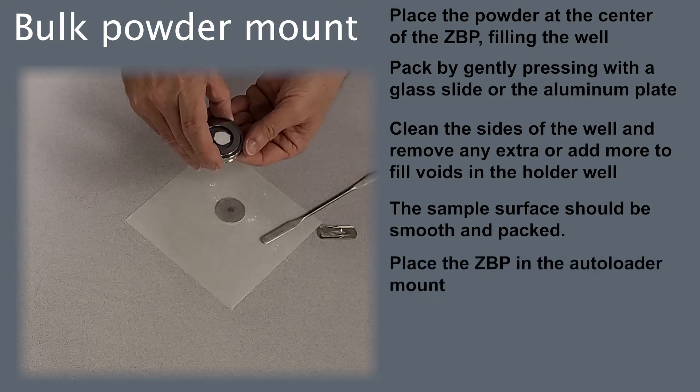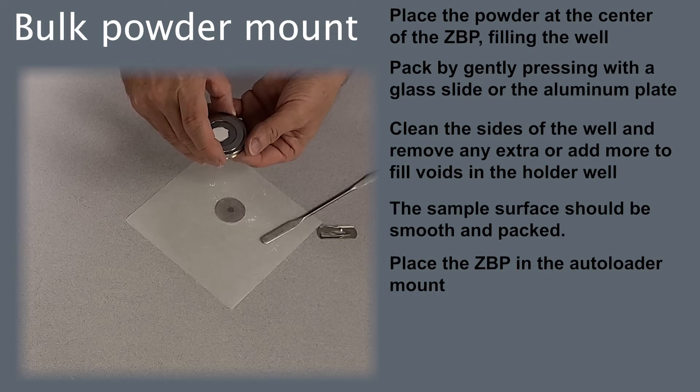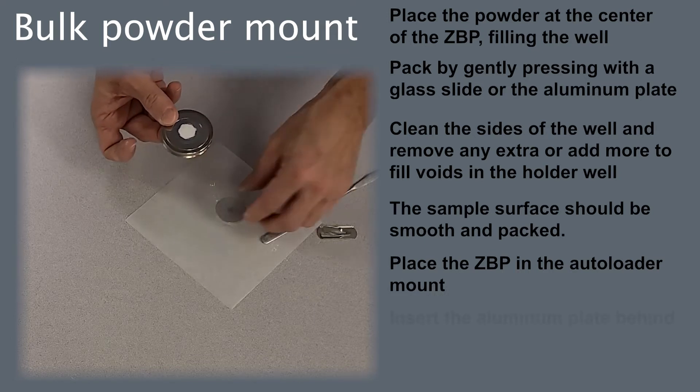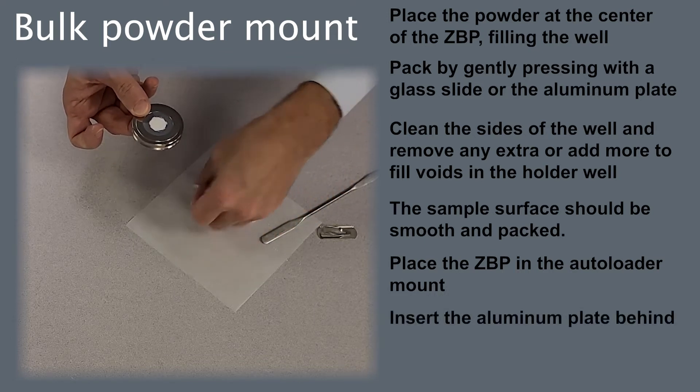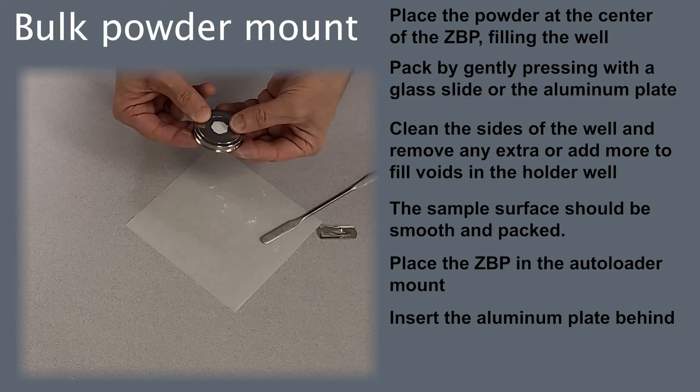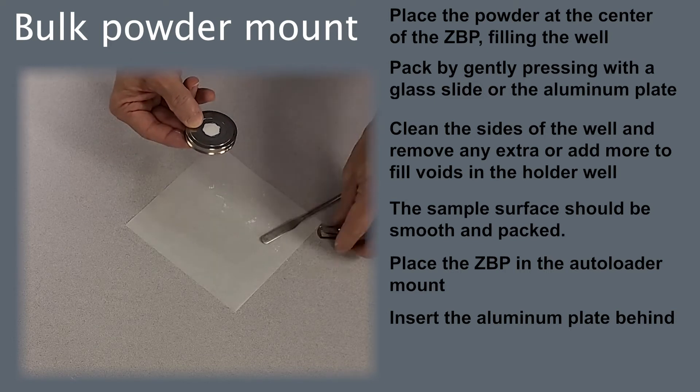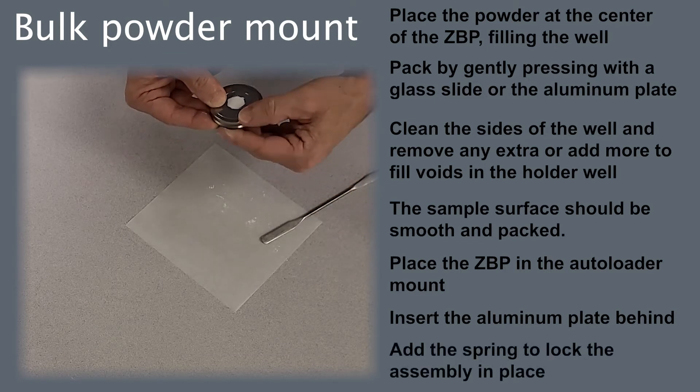Place the sample plate in the auto-loader mount. Place the aluminum plate behind. Place the spring and lock it in place.